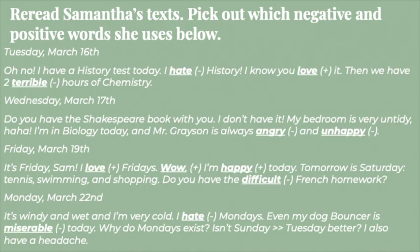So in the first message, she uses the word 'hate,' which is negative; 'love,' which is positive; and 'terrible,' which is very negative. But the only time she uses 'love,' she is talking about her friend. So it's pretty clear she is sad on Tuesday. For Wednesday, she is using the word 'angry,' which is negative, and 'unhappy,' which is negative — and she's using that to talk about Mr. Grayson. So she is sad about Mr. Grayson's class.